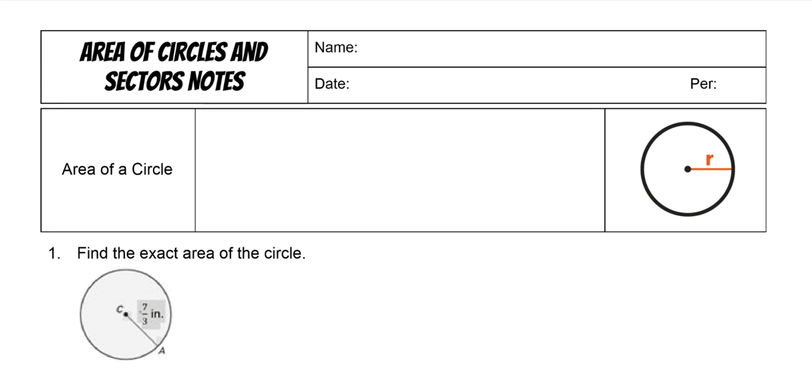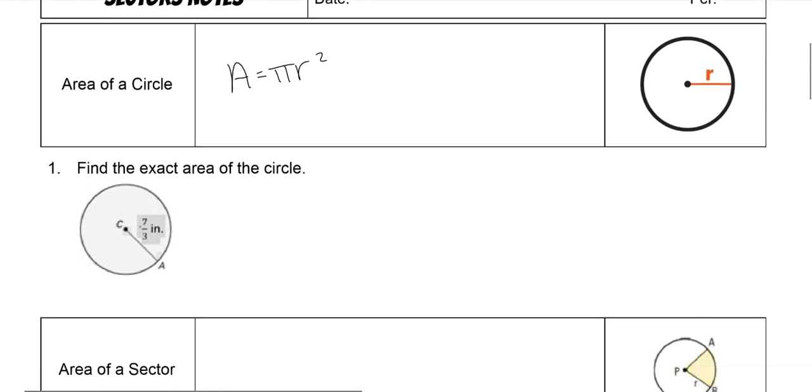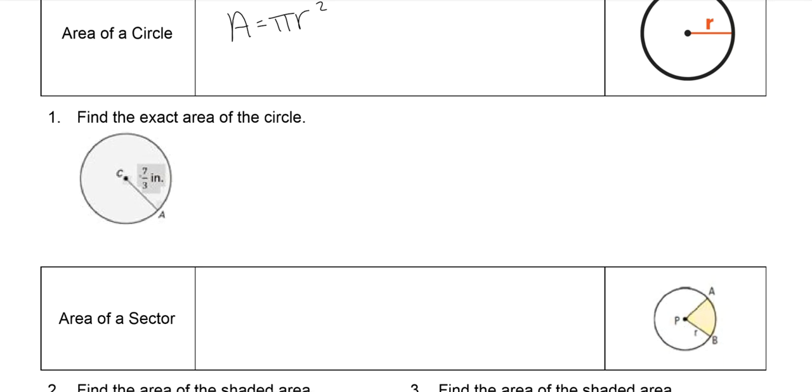Today we're going to go over areas of circles and sectors. The area of a circle is πr², and r is of course the radius. Find the exact area of this circle, which means we do π times the radius, which in this case is 7/3 squared.